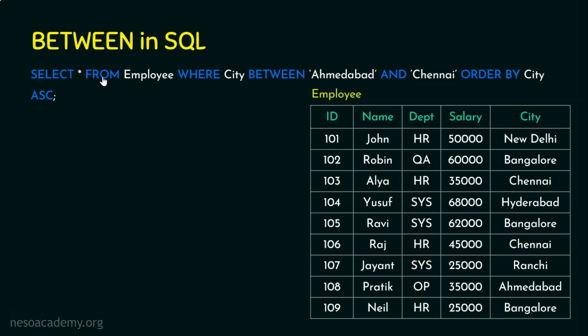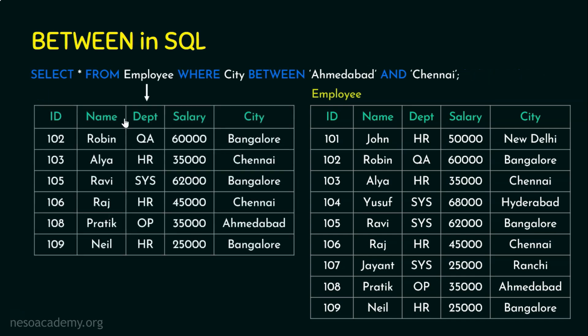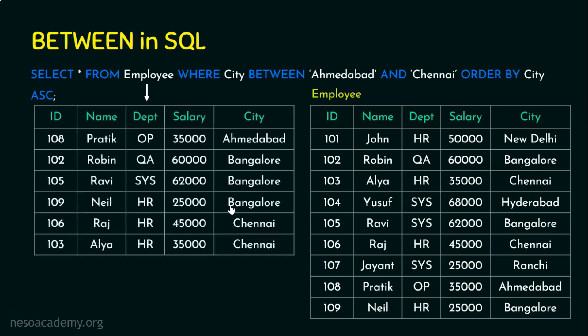One more example: SELECT * FROM employee WHERE city BETWEEN 'Ahmedabad' AND 'Chennai' ORDER BY city ASC. Take the previous output and sort it in ascending order. The output will be the same cities but sorted: Ahmedabad first, followed by Bangalore, followed by Chennai. That's it — I hope the session was informative. Thank you for watching.